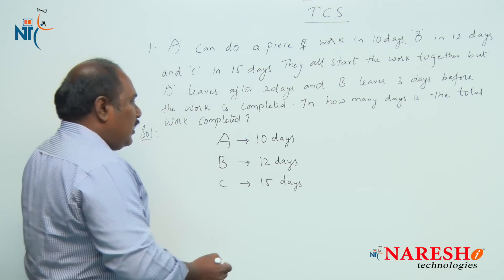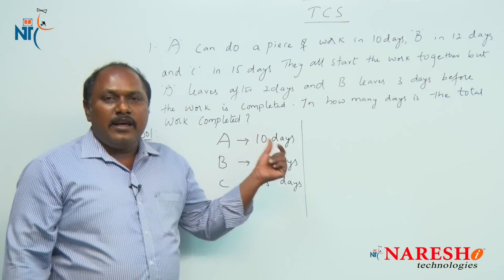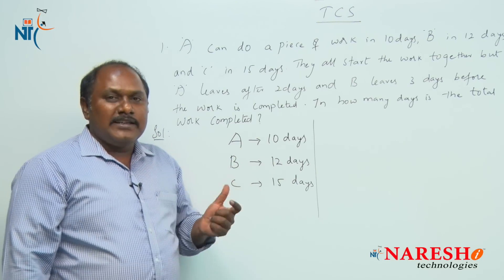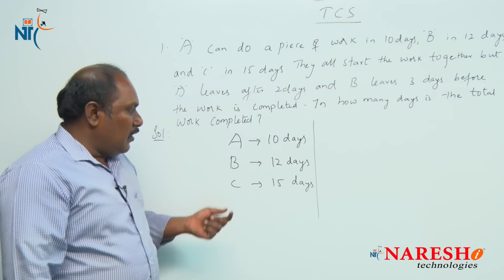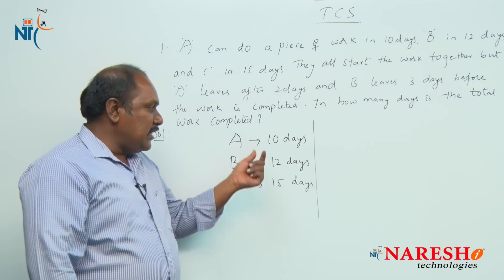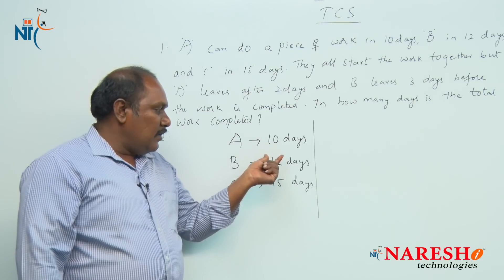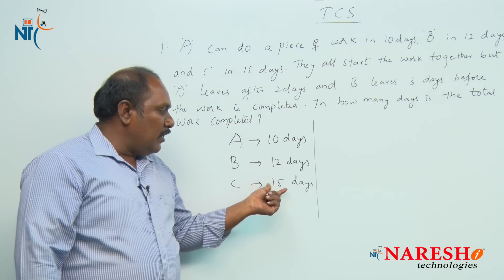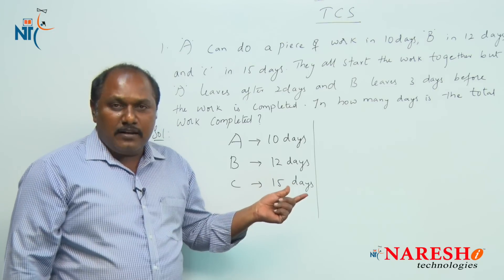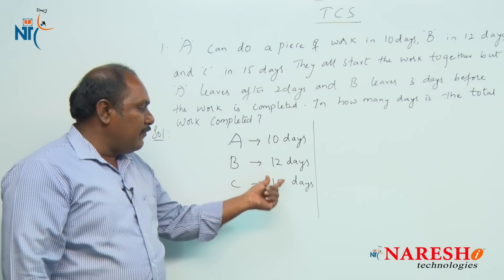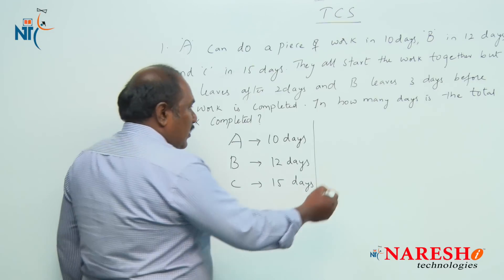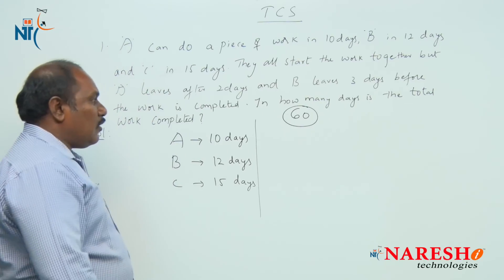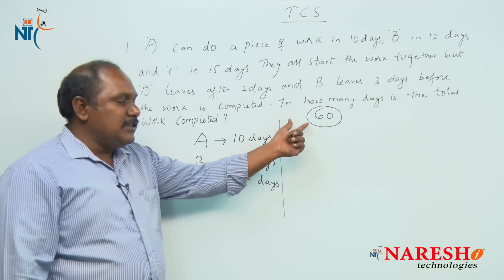Let us assume that their work is to eat chocolates. We take a number that is exactly divisible by 10, 12 and 15 — that is the least common multiple of 10, 12 and 15, which is 60. So let us assume that the total work is eating 60 chocolates.